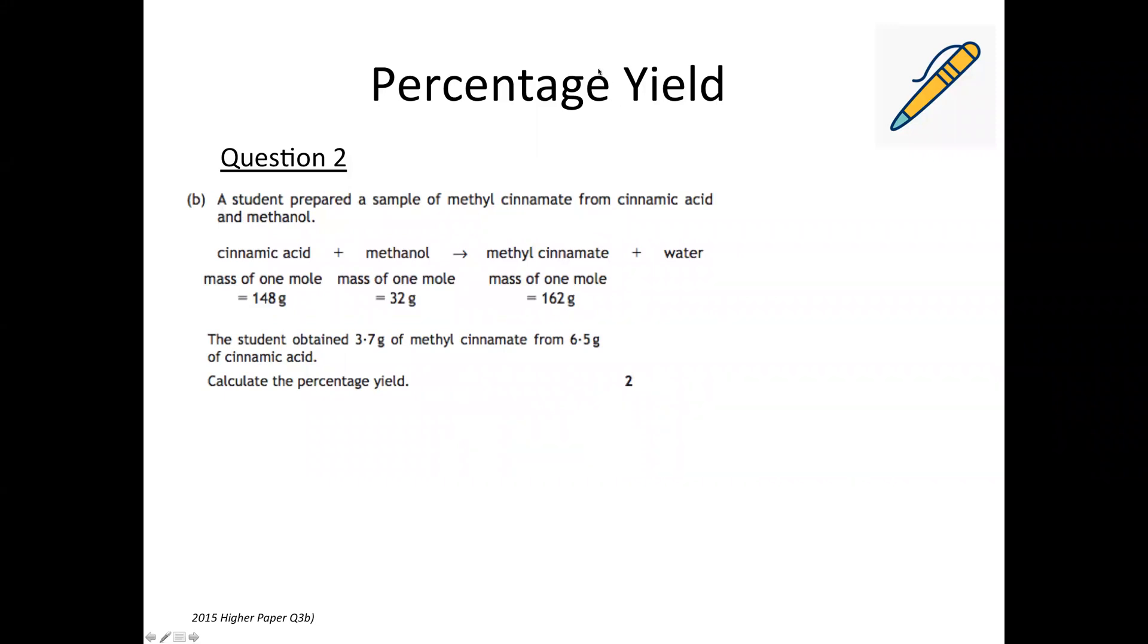Next question is from the 2015 Higher paper, Question 3b. So I'm going to go through the same process. We've got our equation here and the student obtained, so because it's saying obtained that's a clue that it's a product, 3.7 grams of methyl cinnamate from 6.5 grams of cinnamic acid. So these are the two we're interested in and we're calculating the percentage yield. So again we have to start off calculating our theoretical yield. This is our actual yield.